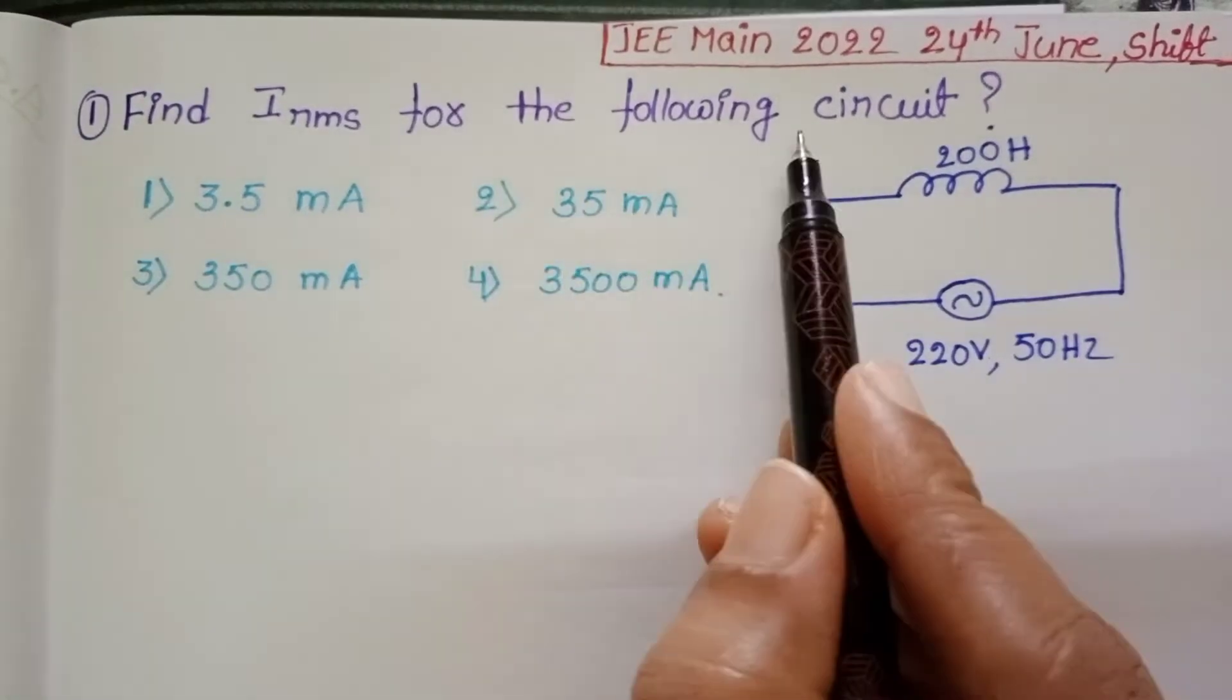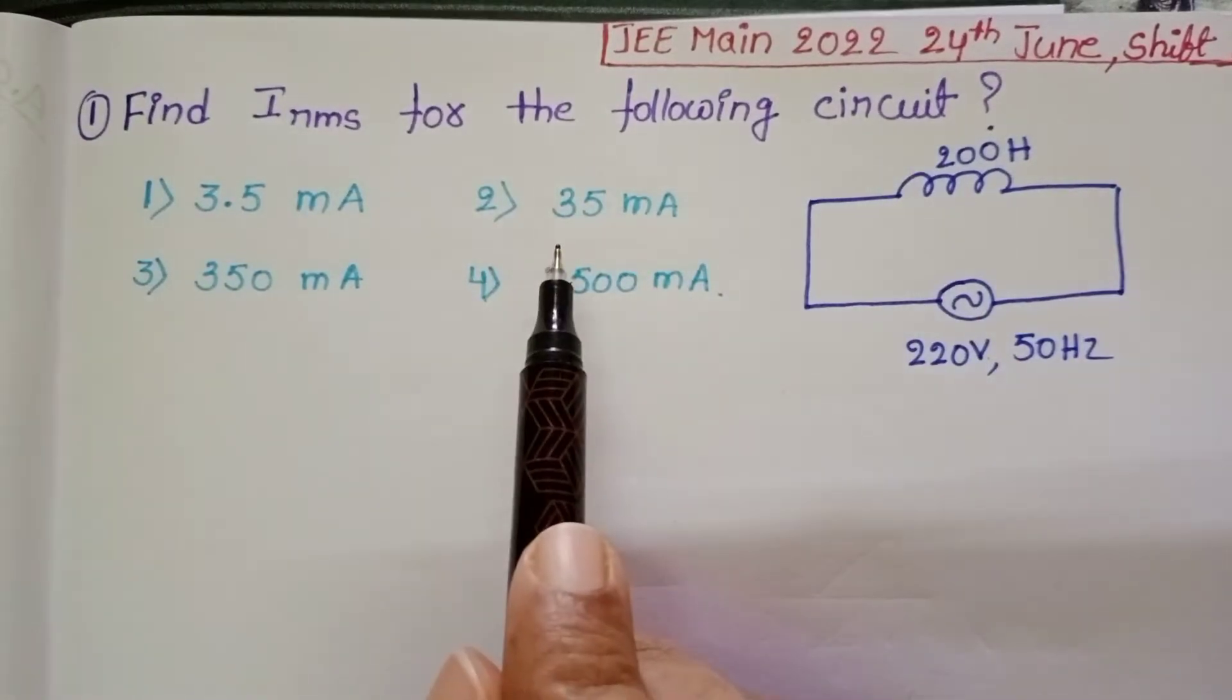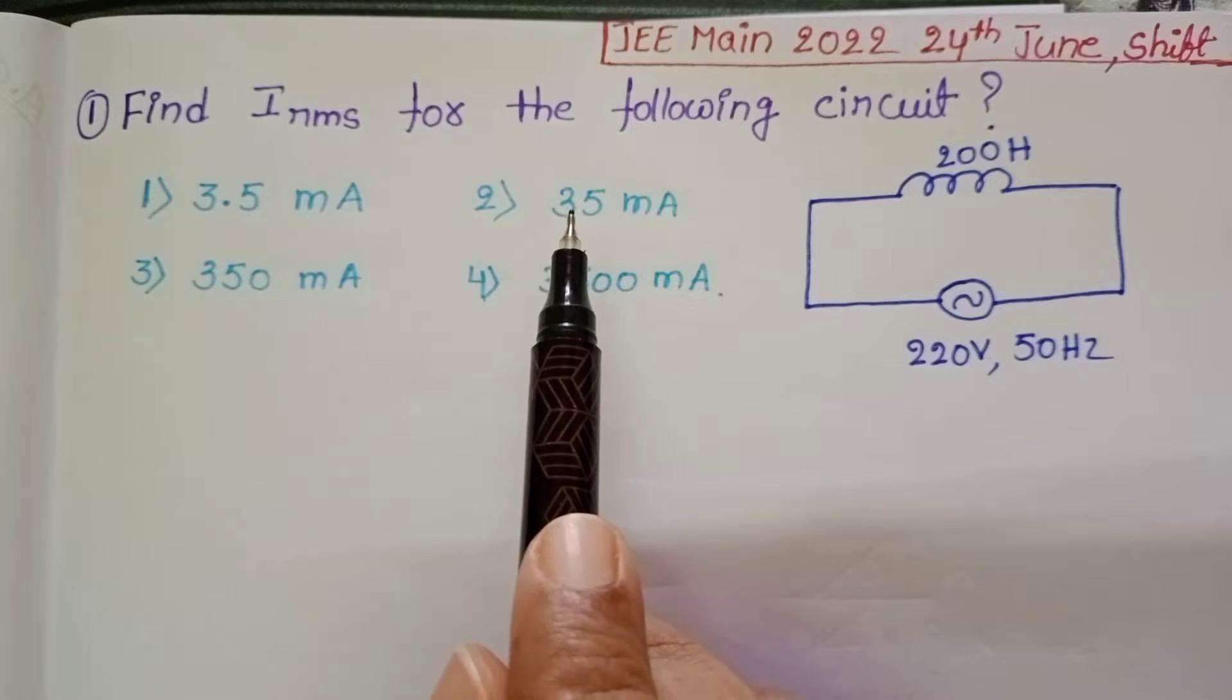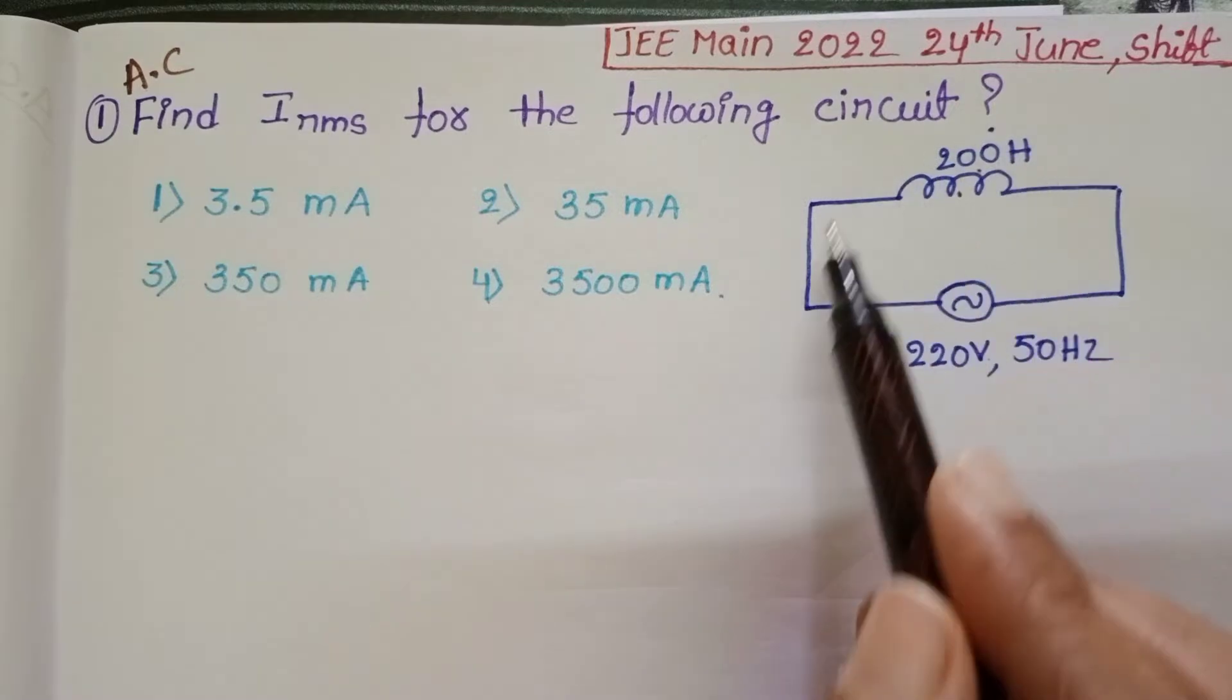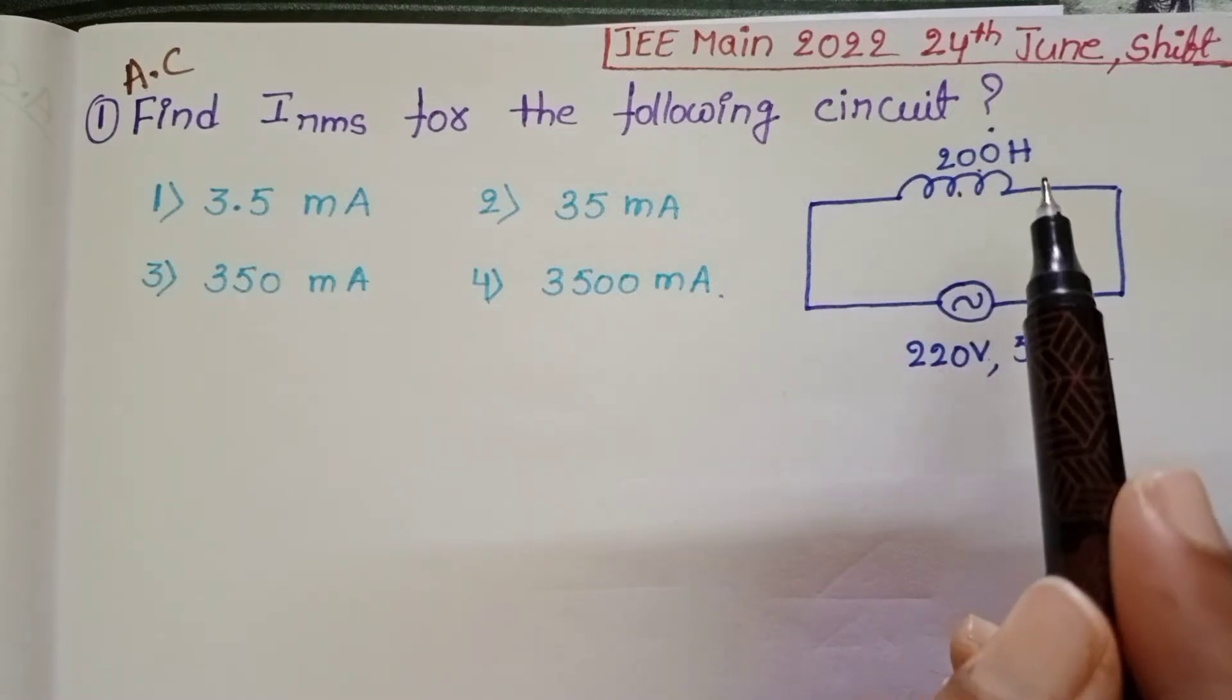Find IRMS for the following circuit. This question is a direct question from alternating current. This is a pure inductive circuit.